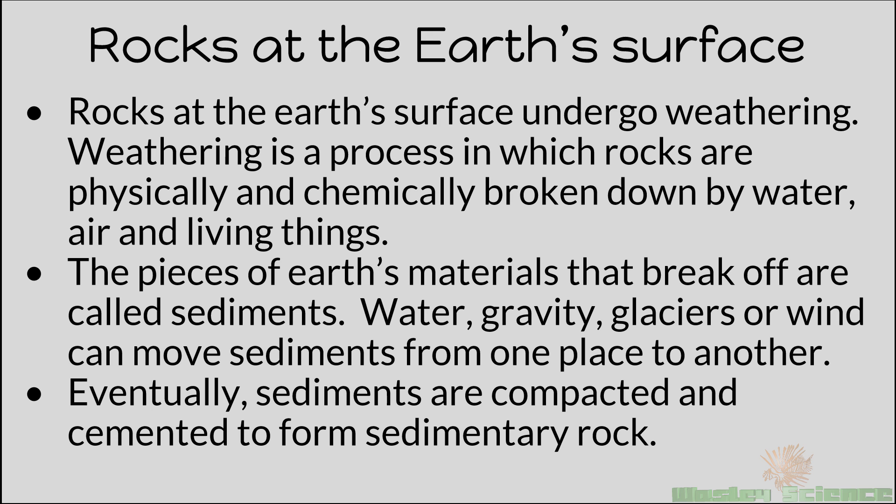Here are the summary notes. When rocks are at the Earth's surface, they can undergo weathering — a process in which rocks are physically and chemically broken down through mechanical and chemical weathering by water, air, and living things. The pieces that break off are called sediments. Water, gravity, glaciers, and wind can move these sediments from one place to another — that's erosion. Eventually sediments pile on top of one another, and with the pressure of the ocean above, get cemented and compacted to form a sedimentary rock.